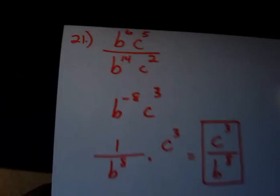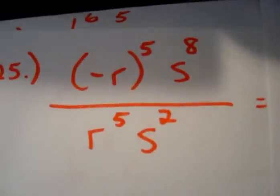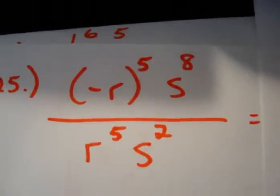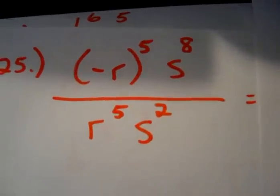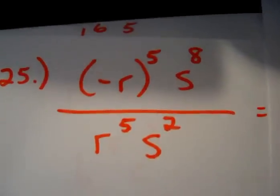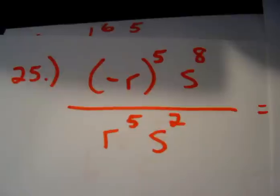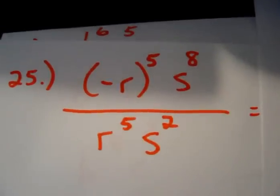Moving along to problem number 25 in the text, we have the following. We have negative r, that whole thing to the 5th power, times s to the 8th, divided by r to the 5th s squared. First of all, we're going to take care of negative r raised to the 5th power.